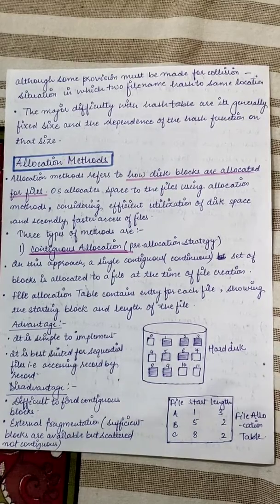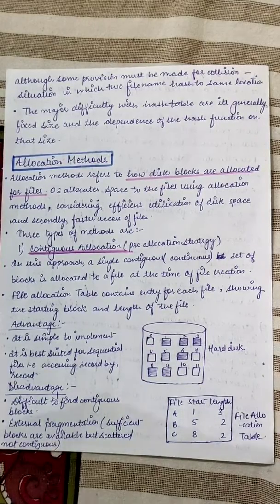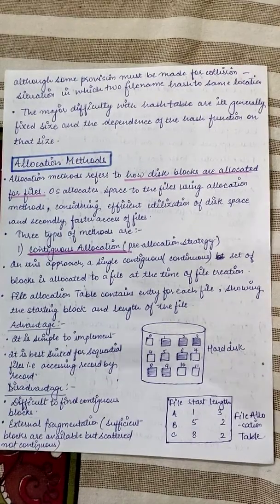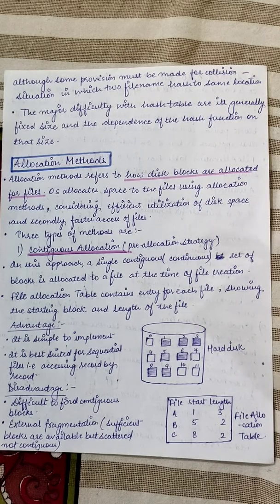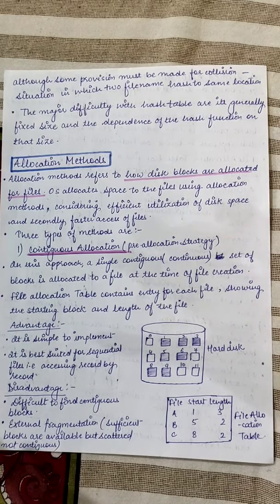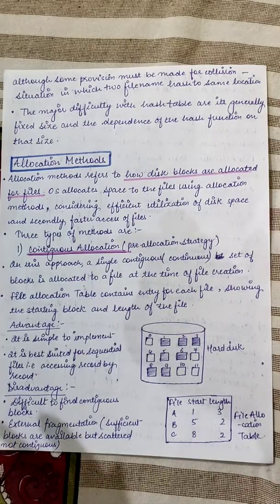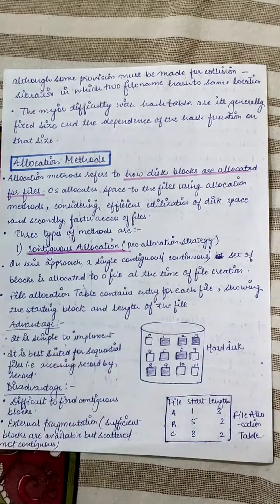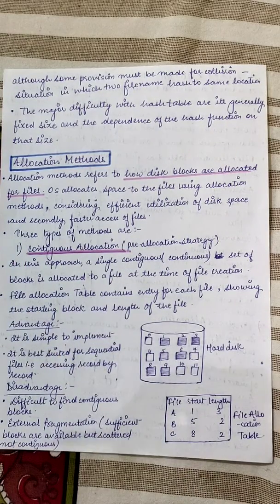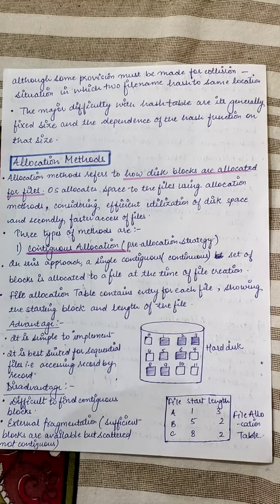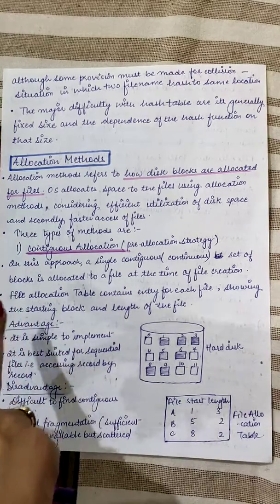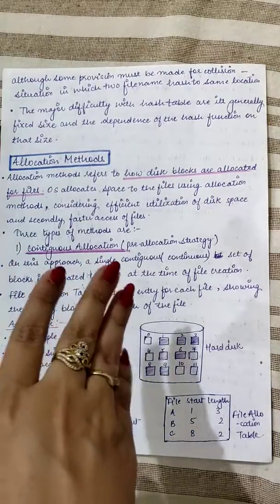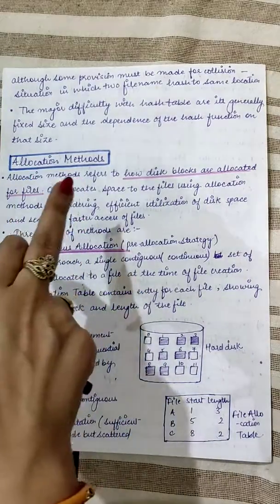The topic for today's class is allocation methods. Allocation methods are those methods used to allocate space to files on the hard disk. Allocation methods refer to how disk blocks are allocated for files. The operating system allocates space to files using allocation methods — it does the job of allocating space to any new file that has to be stored on secondary storage.